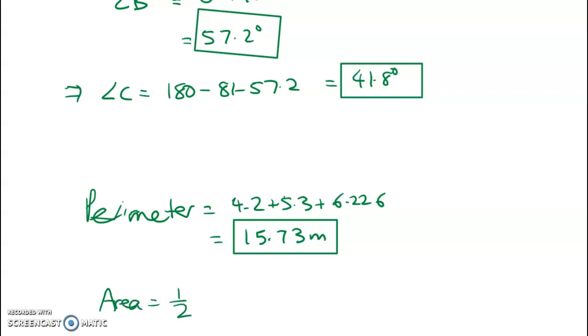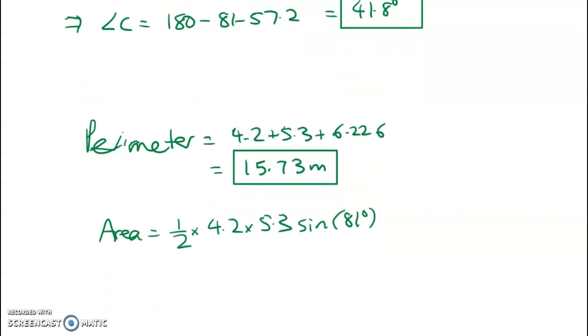Now we'll find the area. Area equals half ab sine c. You can choose any pair and the enclosed angle. I worked with the angle being 81 degrees and I got a final area of 10.99 meters squared. Okay, so that's that one done.